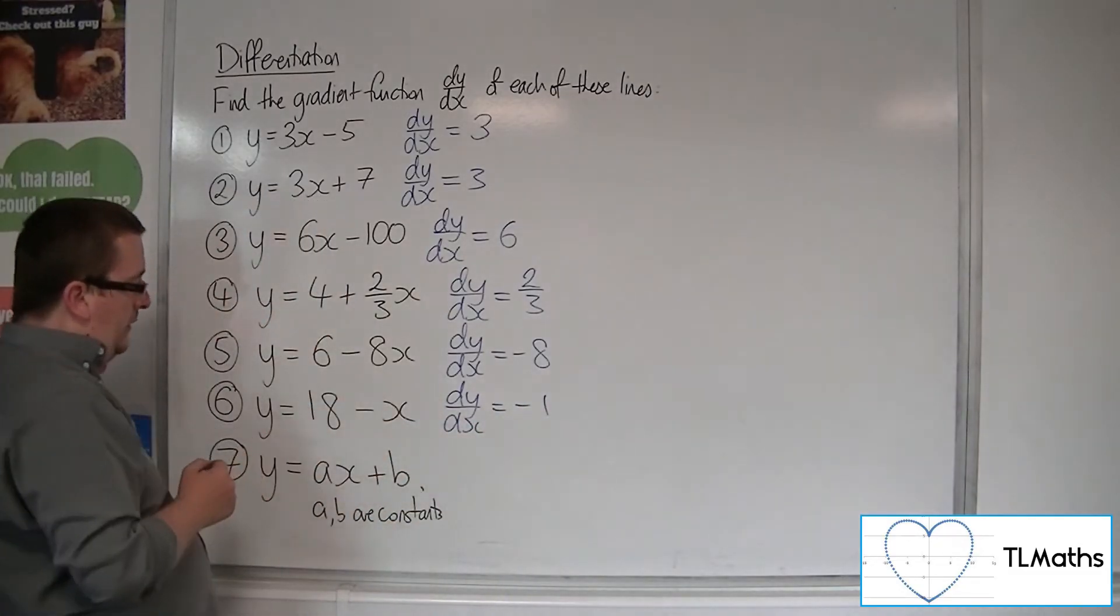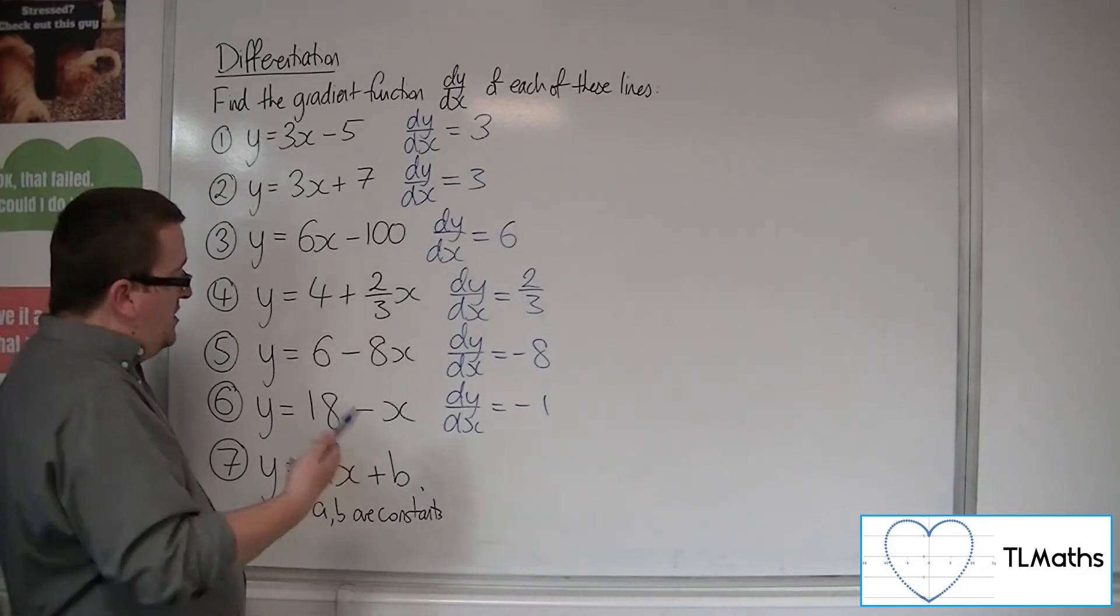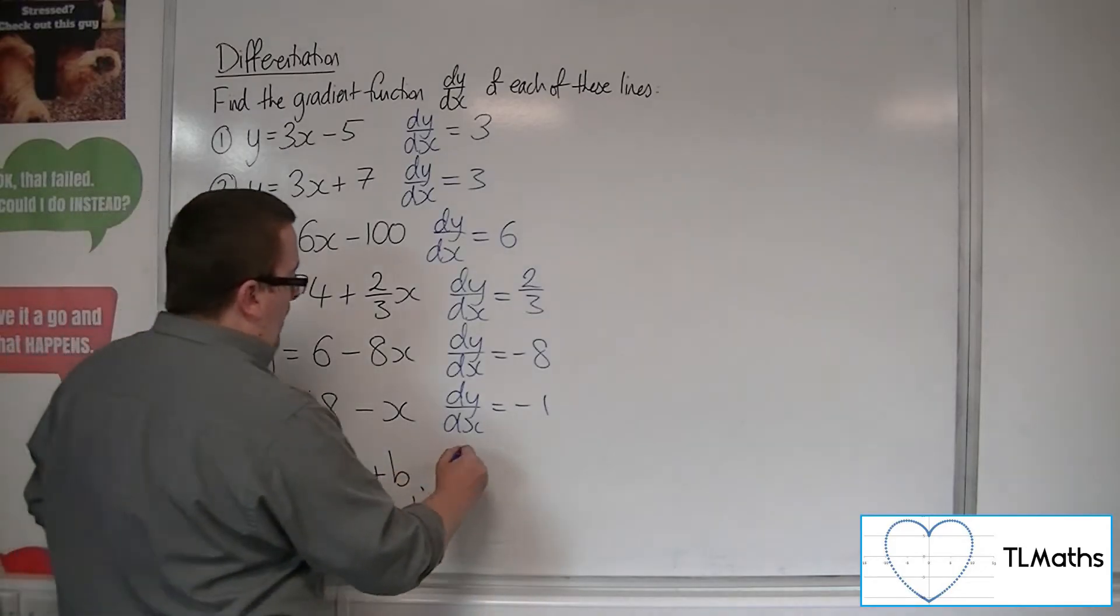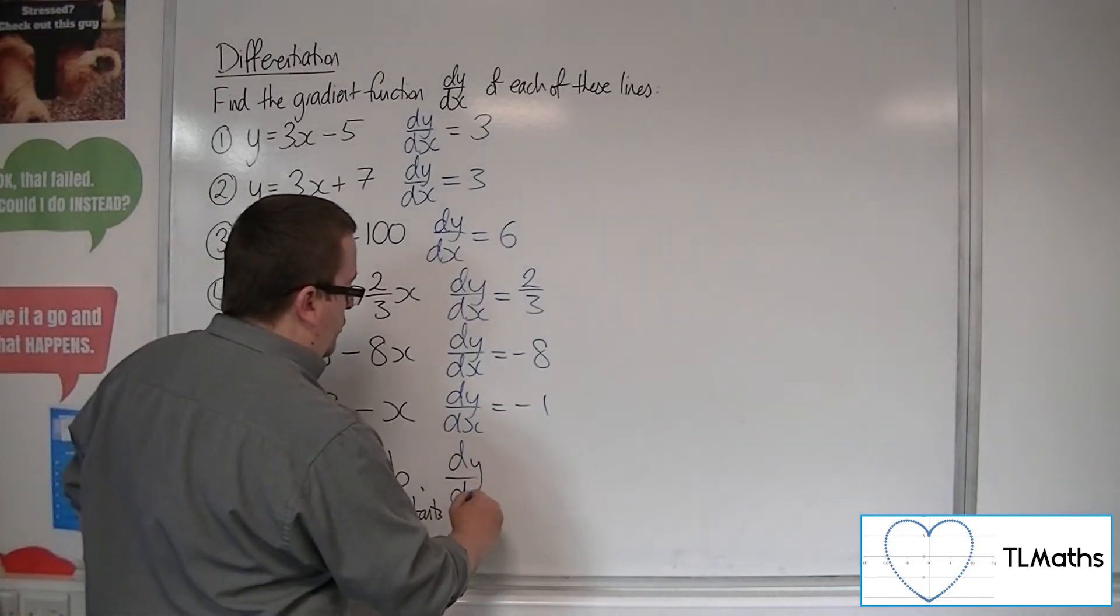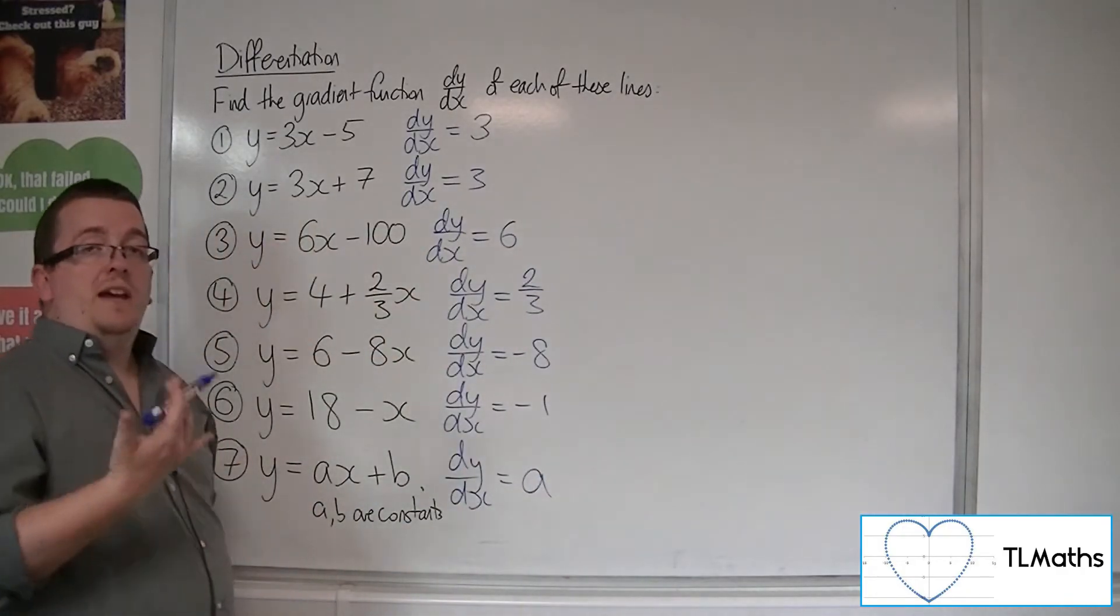And number 7, if a and b are constant, they're just numbers, then x and y are the variables. So when I find the gradient function, it's the coefficient of x, and so just a.